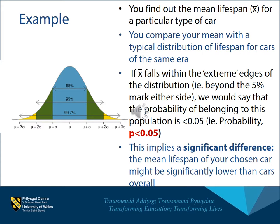So if your mean value falls within the extreme edges of the distribution — that is beyond the 5% mark either side, not within the 95% in the middle, but at the 5% either end — we might say that the probability of your mean belonging to this normal typical population is less than 0.05, less than 5%. Written down, we would write that P is less than 0.05. It means that it's quite likely that your chosen car has a significantly lower lifespan, or possibly greater, than cars overall. If the mean value is down on the left-hand side it's significantly lower; if it's up on the right-hand side in that little yellow bit, it would be significantly higher. The point is it's significantly different — probability small, chances of significant difference are increased.